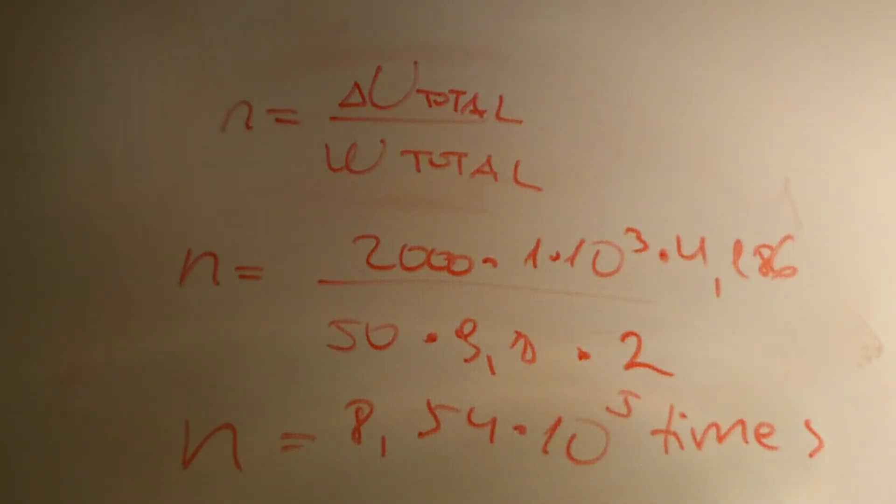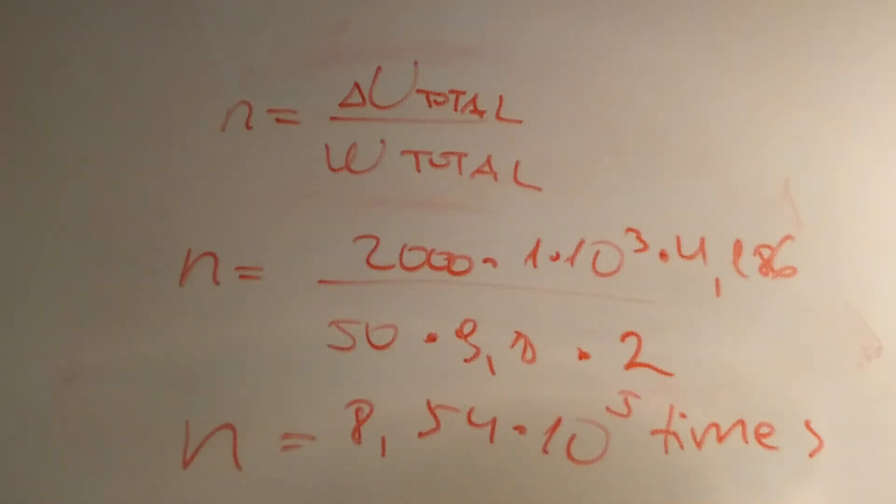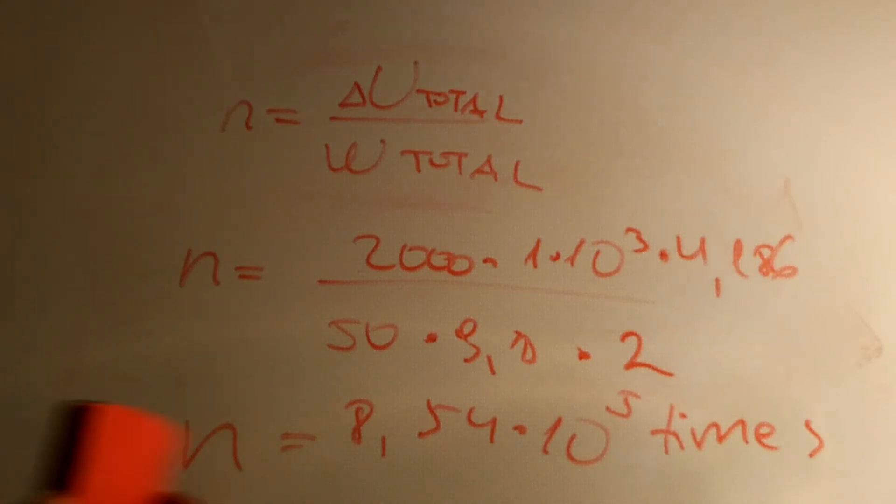So that's a lot. The student has to lift the barbell this amount of times in order to burn 2,000 calories. Now you have to take into consideration that when we eat a certain amount of food, not all of that energy is available for us to burn during physical activities. Part of that energy is used for other things like maintaining body temperature or metabolism.